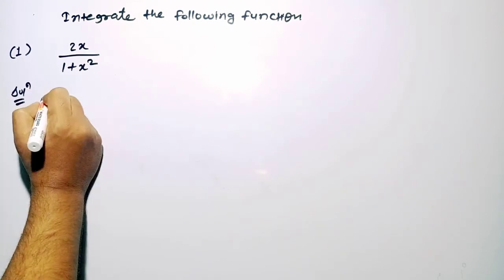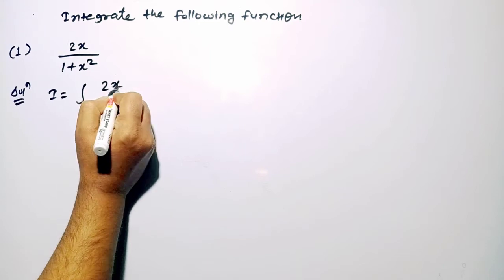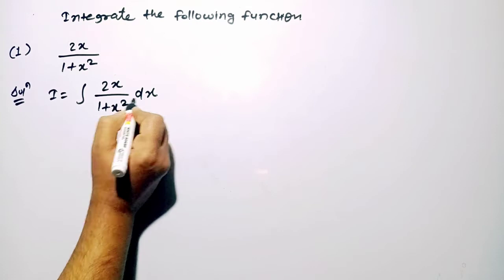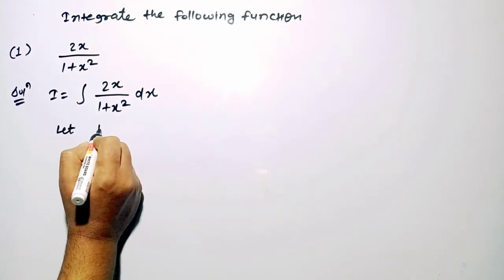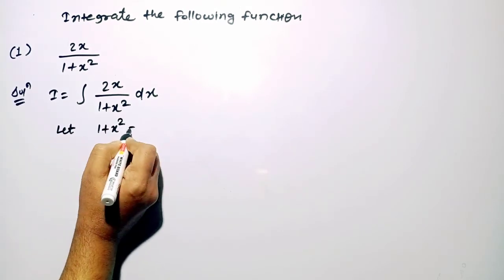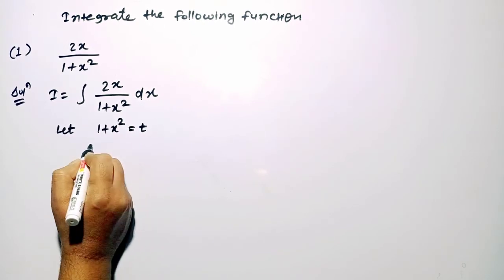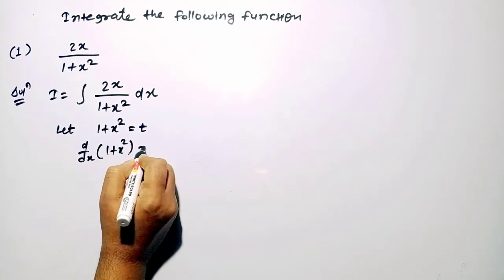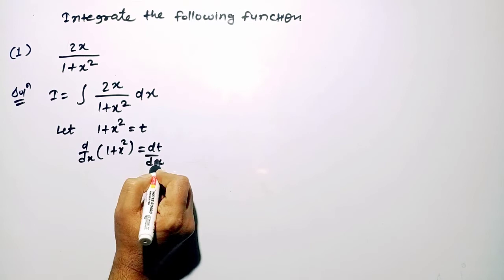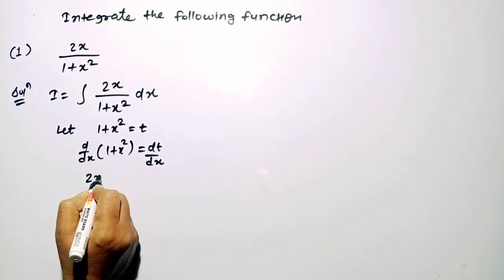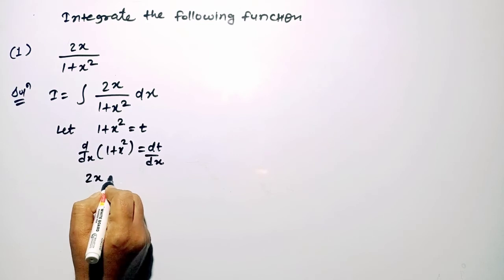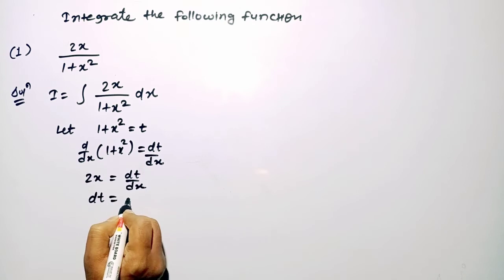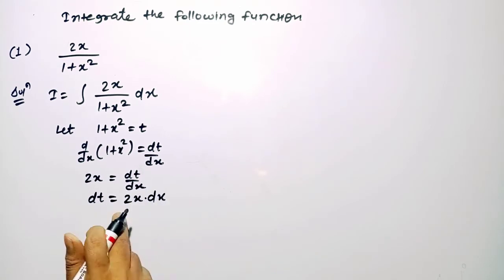Consider the first function: 2x upon 1 plus x square, integrating with respect to x. In the denominator we will consider 1 plus x square equal to t. By differentiating on both sides we get 2x and dt by dx, so the value of dt will be 2x dx.